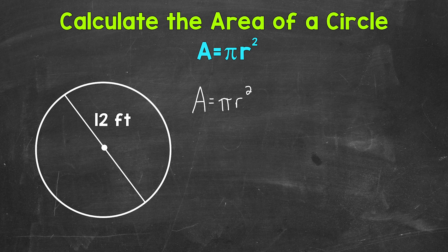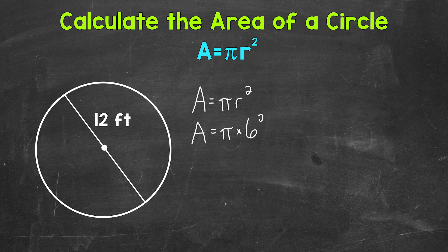Next, we can plug in our radius. Now we are given the diameter, so we need to divide that diameter by 2 to get the radius. Because remember, the radius is half of the diameter. 12 divided by 2 gives us a radius of 6 feet. Let's plug that in, and that gives us 6 squared.